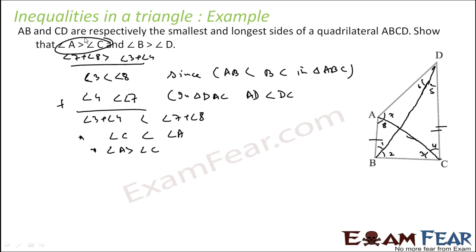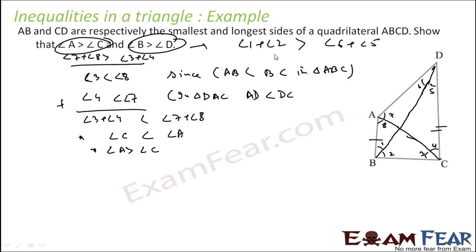Similarly, let us prove the second part. Here, angle B is greater than angle D. Angle B is angle 1 plus angle 2, and D is angle 6 plus angle 5. So if we see, there is a relationship between angles 1 and 6.